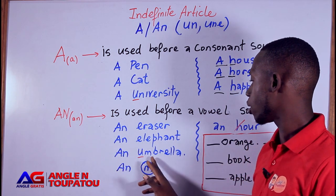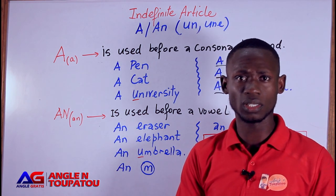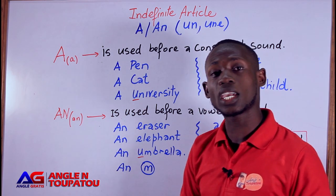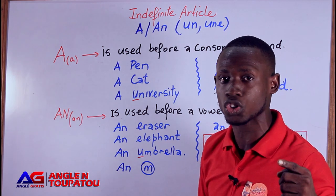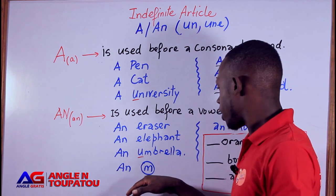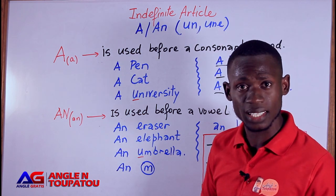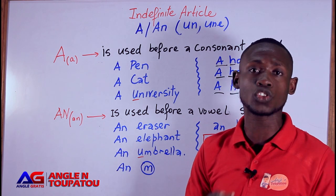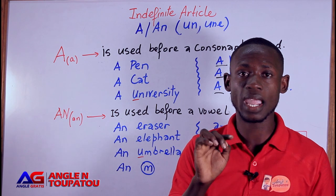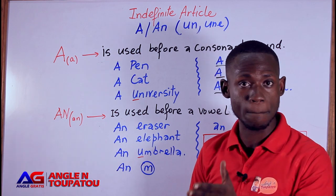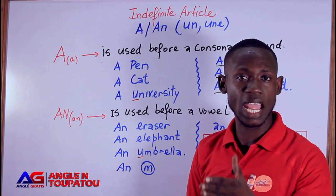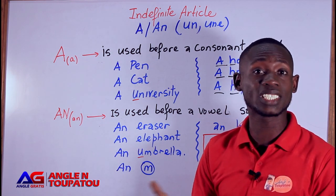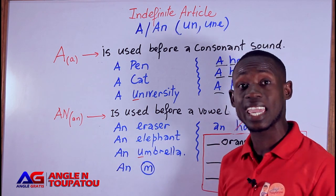Now I say 'an M'. What's important here is the letter M — some consonants give a vowel sound, and some give a consonant sound. When I say the letter M, I say 'em' — it gives a vowel sound. So I say 'an M'. I don't say 'a M'. But if I say the letter D, I say 'D' — it gives a consonant sound — so I say 'a D', not 'an D'. I say 'an M' because M gives a vowel sound when you pronounce it.